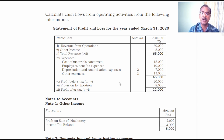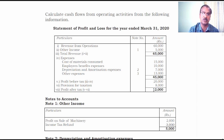From profit before tax, they have subtracted provision for taxation of 8,000 rupees and have finally arrived at profit after tax amounting to 12,000 rupees. This is what we learn from the Statement of Profit or Loss for the year ended 31st March 2020.